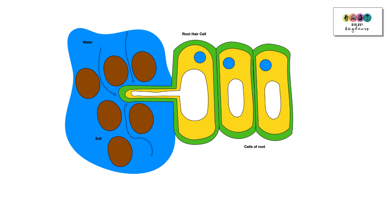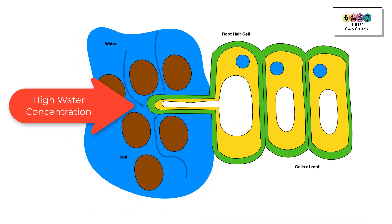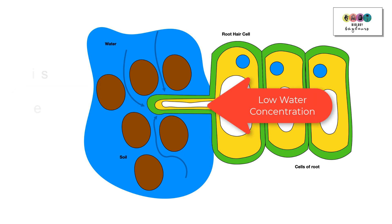Water is going to move from where there's lots of it around the root hair in the soil to where there's less of it into that root hair cell, and it's going to do so by moving passively across the semi-permeable membrane.